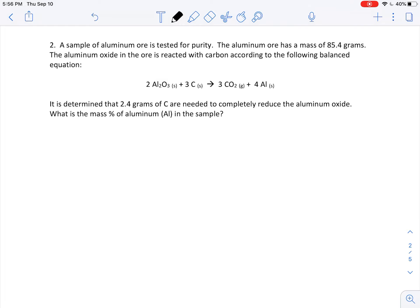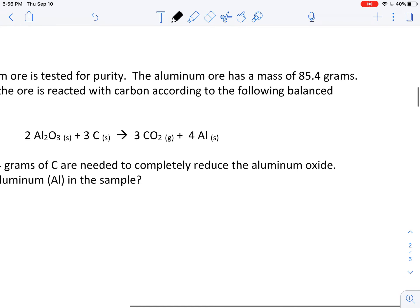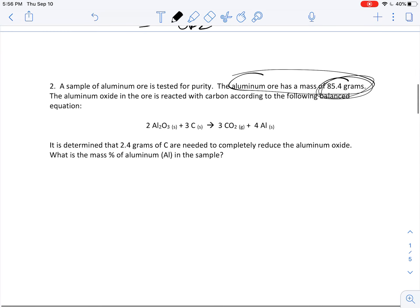Here we are at number two. So same thing. What does it say? It says I've got aluminum ore and the ore has a mass of 85.4 grams.